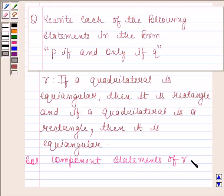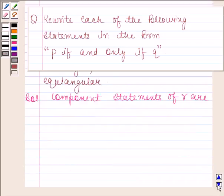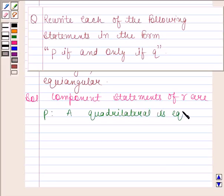Component statements of R are: a quadrilateral is equiangular, and a quadrilateral is a rectangle.